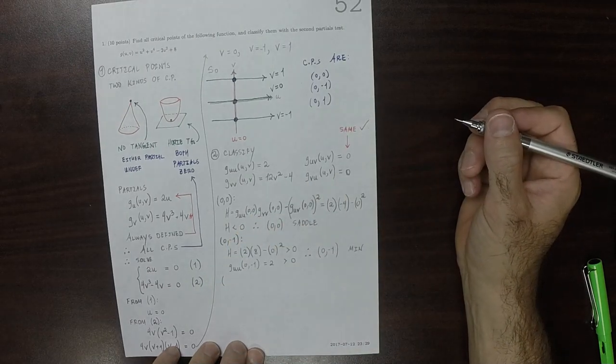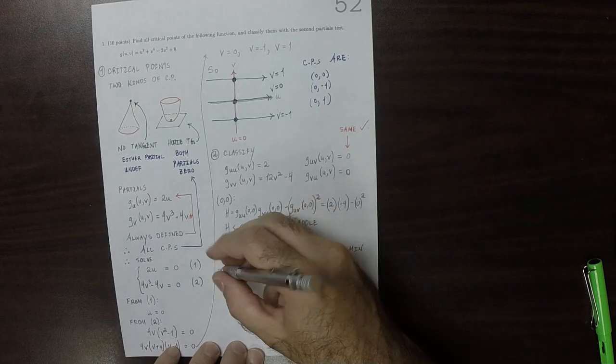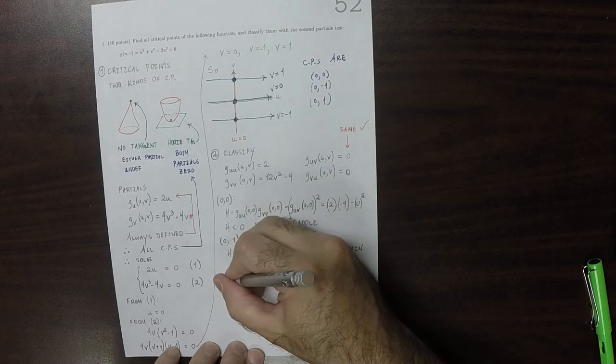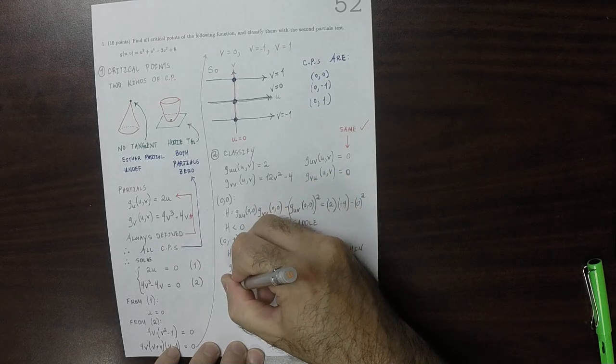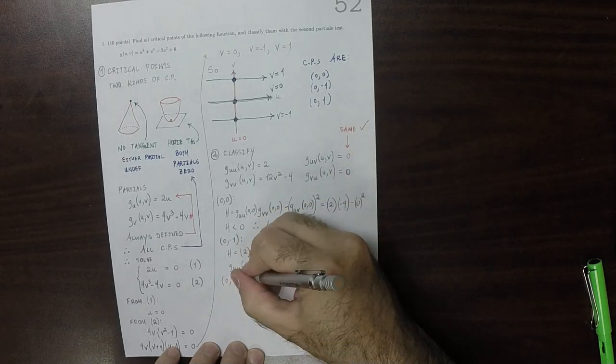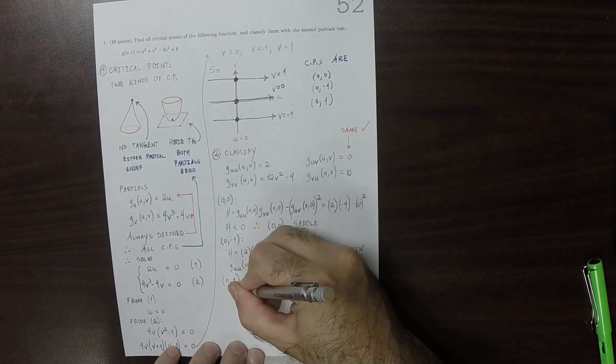And then the zero, one critical point, zero, one, the classifier there.